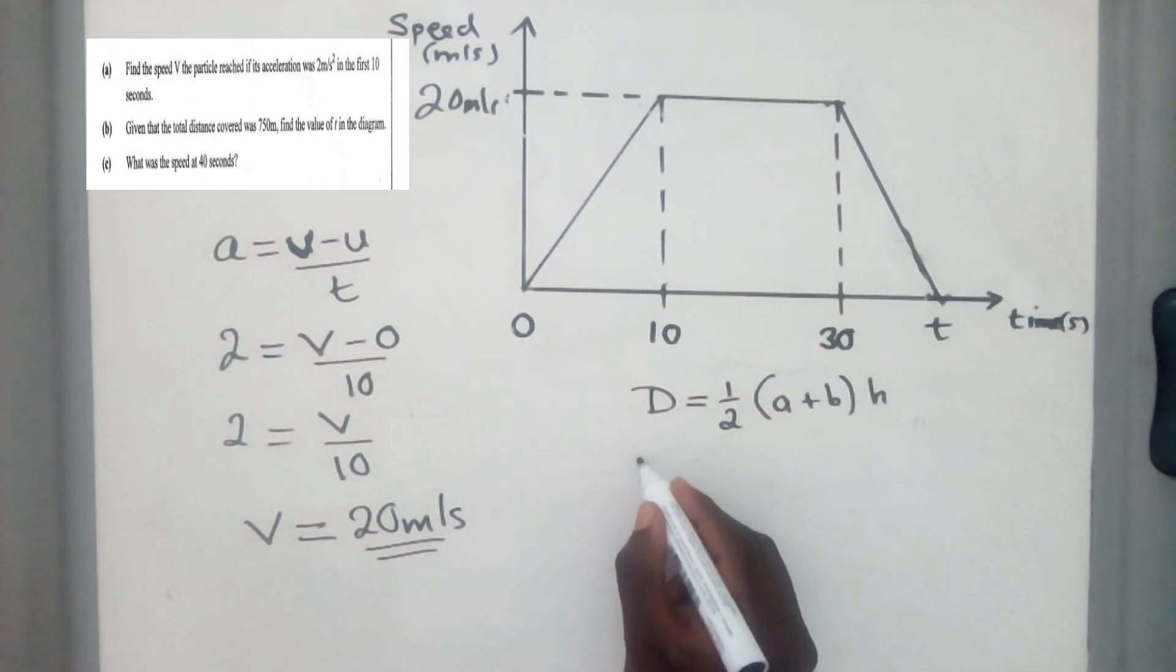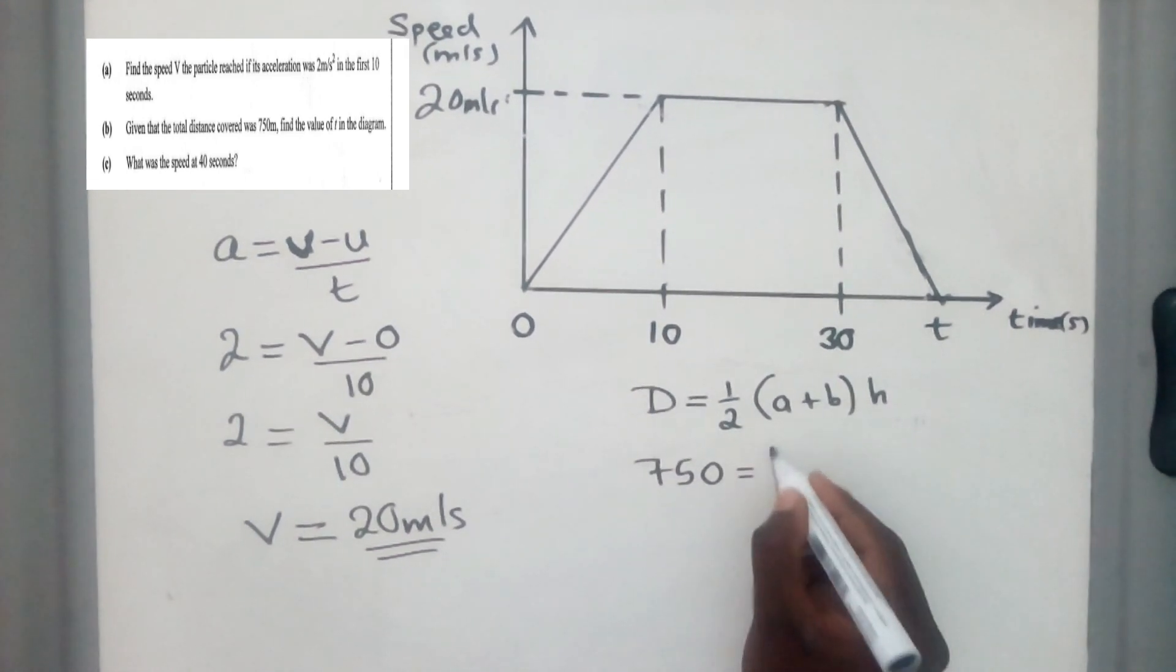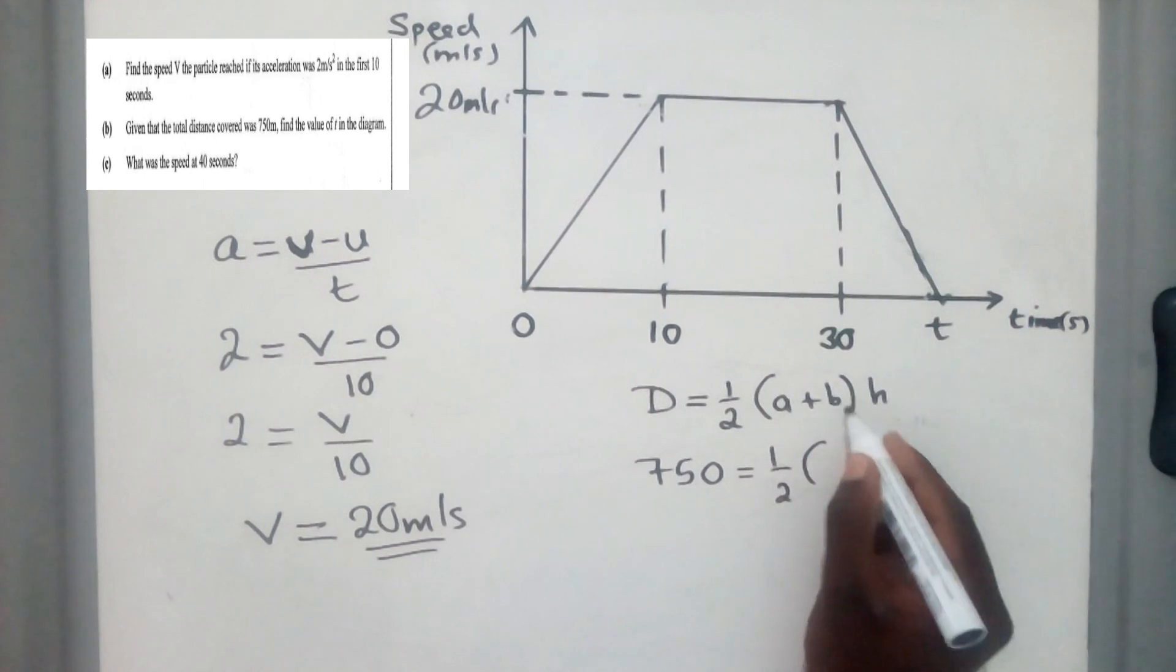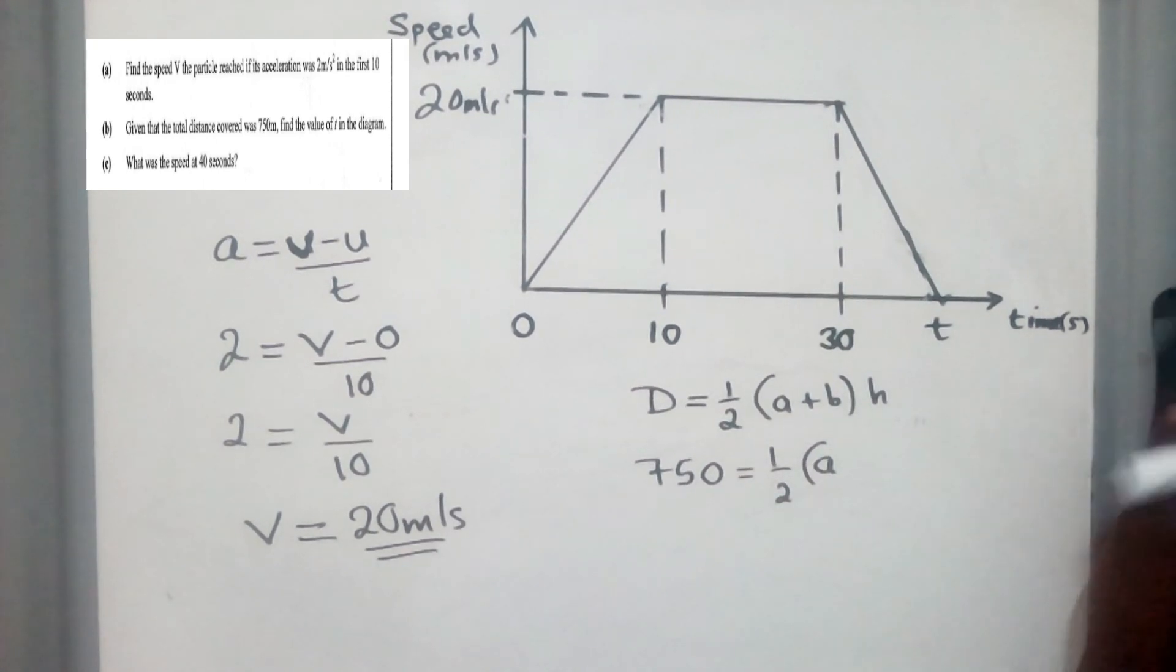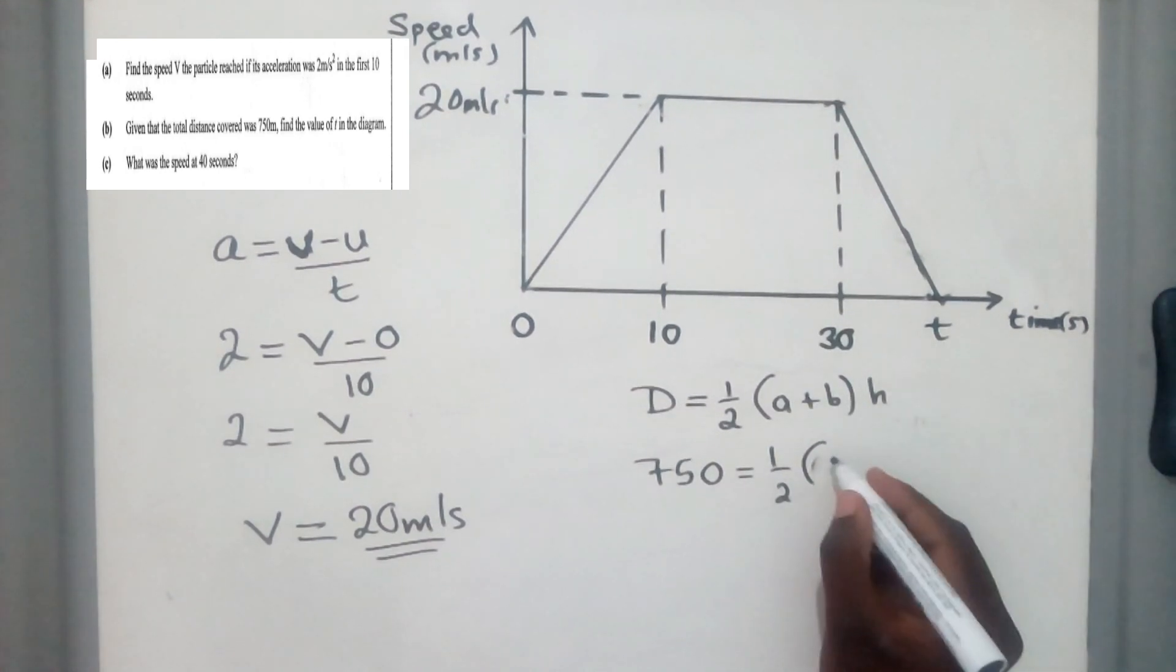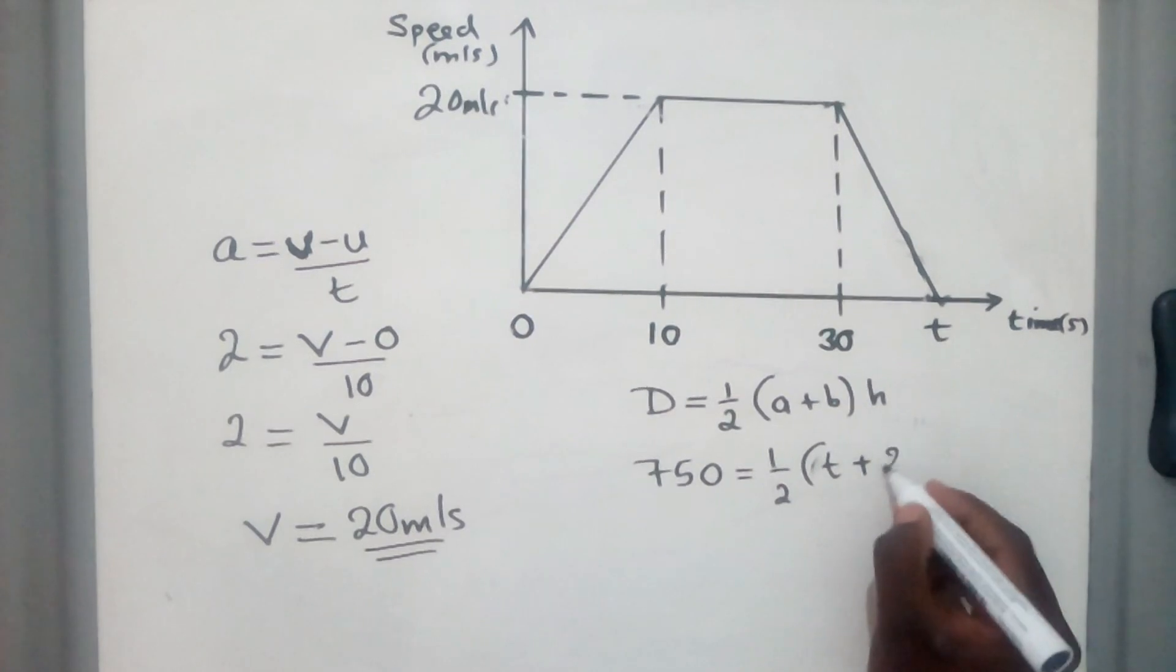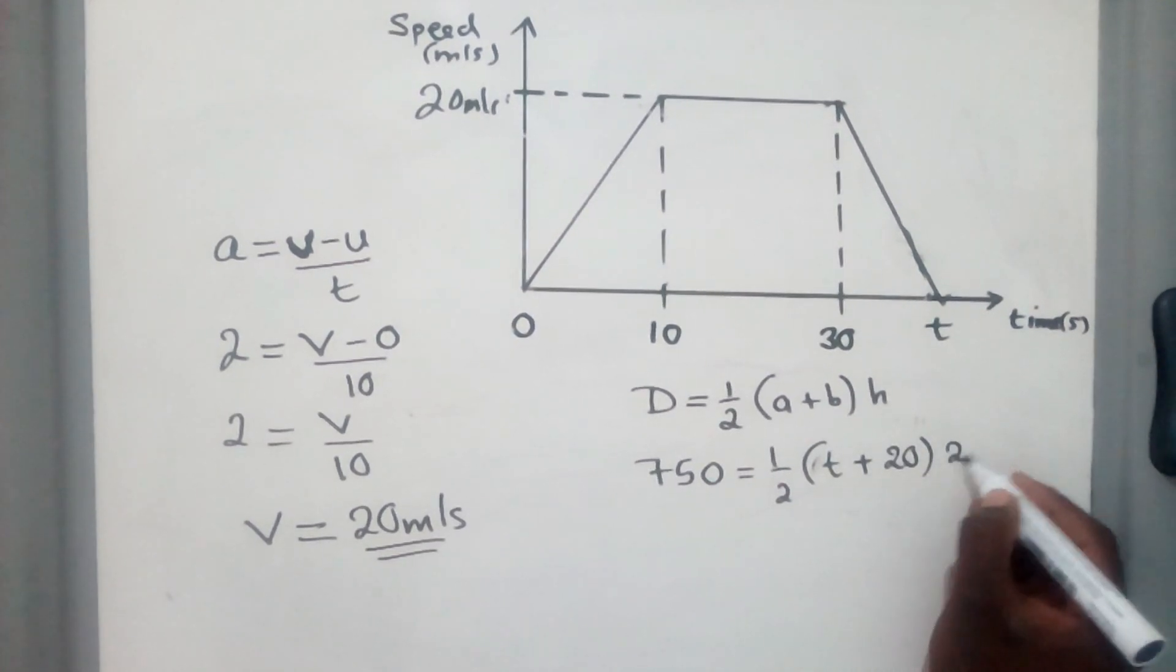So here where it says distance, we'll put the distance that we've been given in the question. And then for a, we'll put t. Here where a is, we'll put t. And where b is, we'll put 20. And where h is, 20.